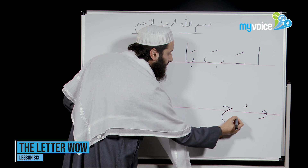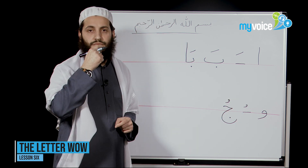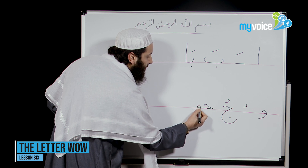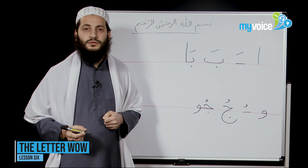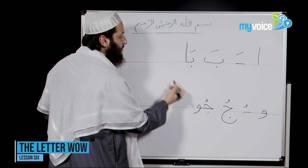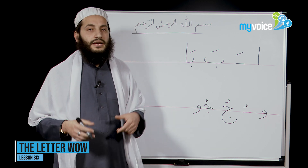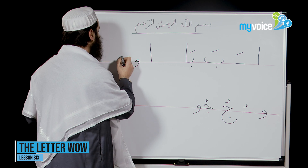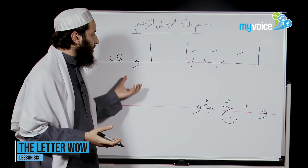The letter JIM with Dhamma is JOO — make your mouth like a circle, JOO. So if you put JIM with WAW, the sound becomes JOO. Because we need this letter like ALIF, like also YAA — these three letters ALIF, WAW, YAA — are very helpful to start reading. That is why we jump to WAW. After a while, we will take the letter YAA as well.